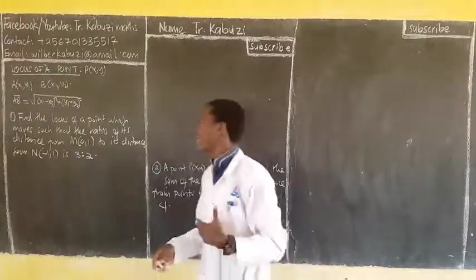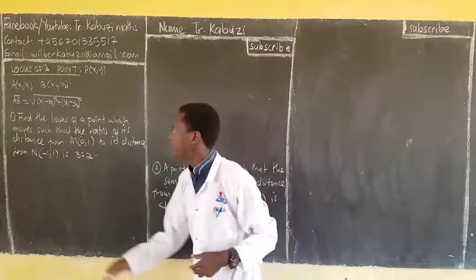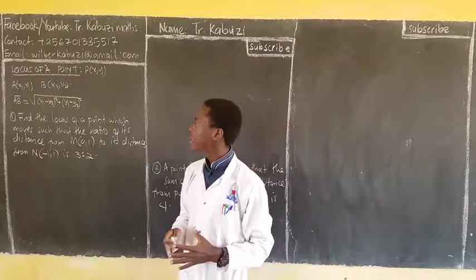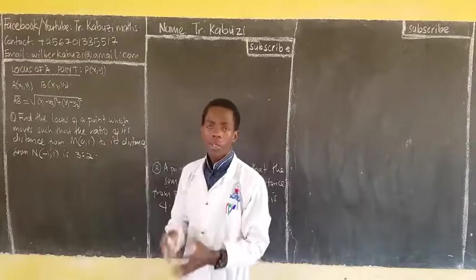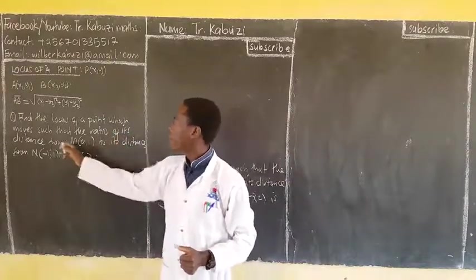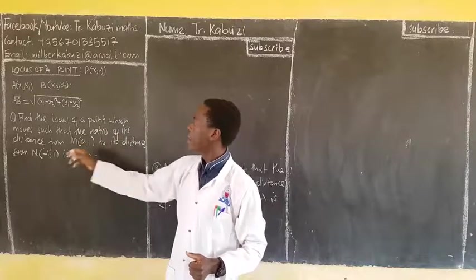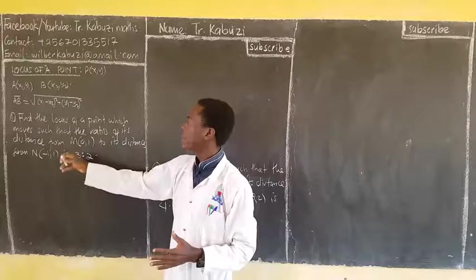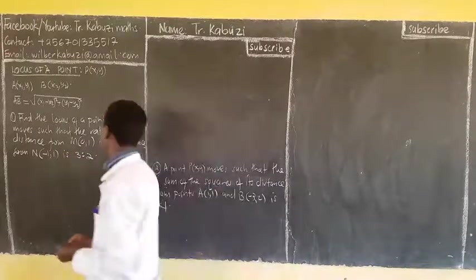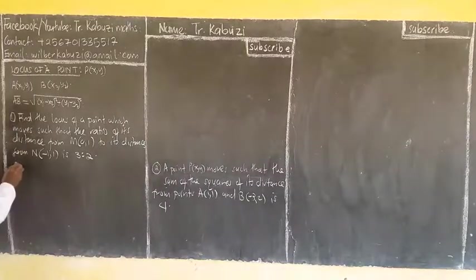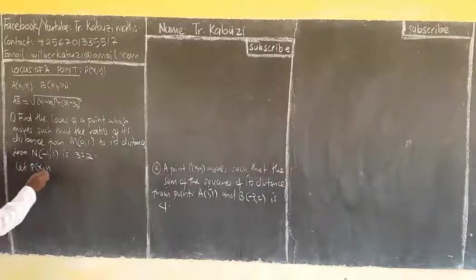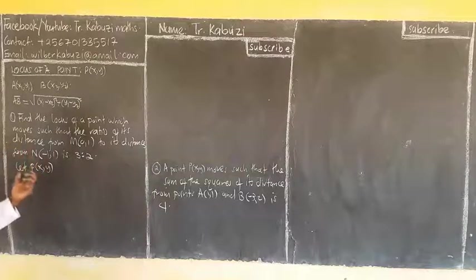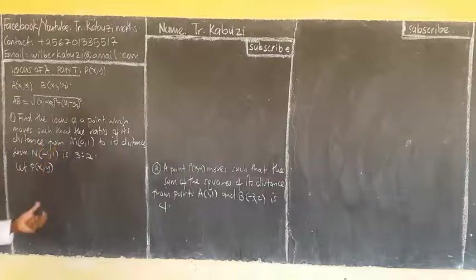Okay, members, today I will show examples about a locus. This one is telling us that finding a locus of a point which moves such that the ratio, of course we know what the ratio is, of its distance from point M to its distance from point M' is 3 to 2. If we say, let P(x,y) be that point that is going to describe the locus.